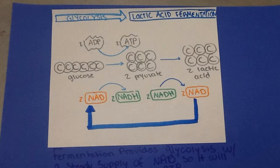Glycolysis takes a molecule of glucose and produces two net ATP molecules. This occurred because oxygen was unavailable and ATP did not produce, causing the muscle to cramp.